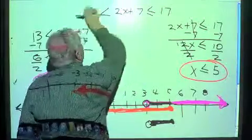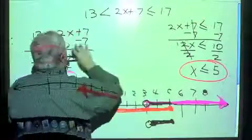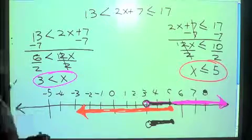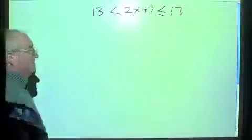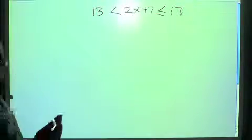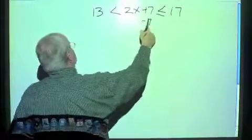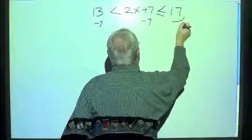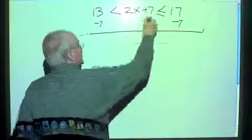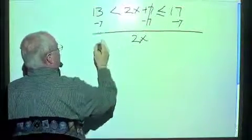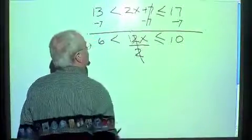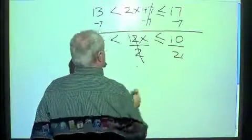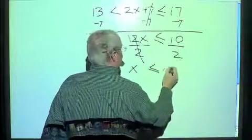This is one way to do it — take a compound 'and' inequality and break it into two separate inequalities. Now let's do it a different way. We take the exact same problem: 13 is less than 2x plus 7 is less than or equal to 17. This time, instead of breaking it into two, let's solve it as one. Subtract 7 from all three parts: 6 is less than x is less than or equal to 10. Then divide everything by 2, giving us 3 is less than x is less than or equal to 5.